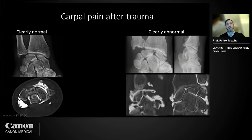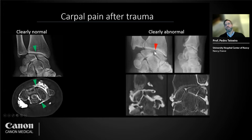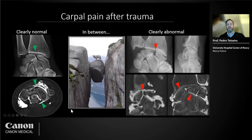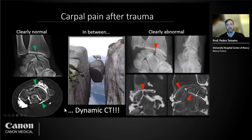In our clinical practice, we use dynamic CT when patients do not fall into clearly normal or clearly abnormal categories on static CT arthrography. If it's clearly normal — no diastasis, normal ligaments — or clearly abnormal — diastasis, abnormal carpal position, full-thickness tear, chondral change — no further study is needed. But if the findings are in between and the biomechanical impact is uncertain, we use dynamic CT. In about 30 to 40 percent of cases with doubtful or inconclusive initial static workup, we found signs of wrist instability on dynamic CT — a very promising result.